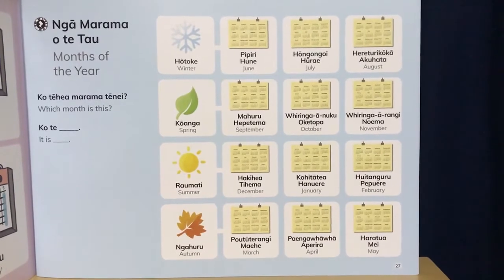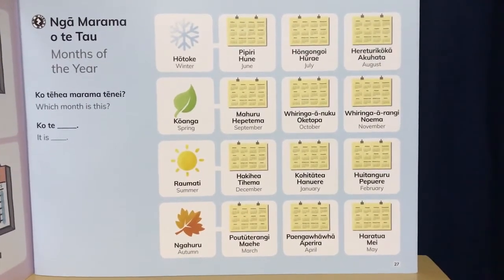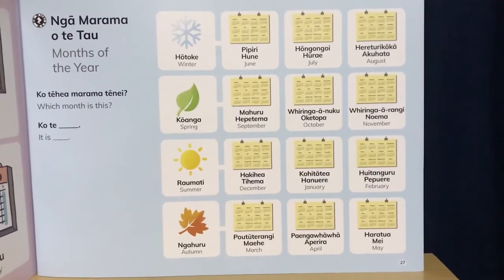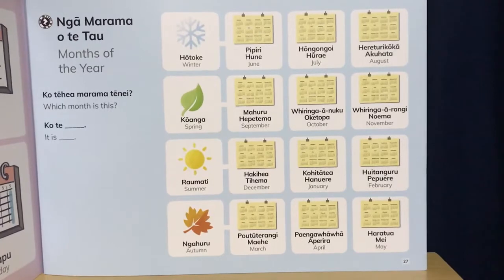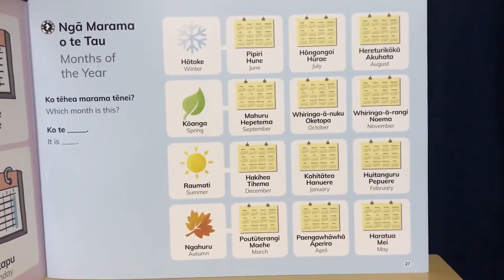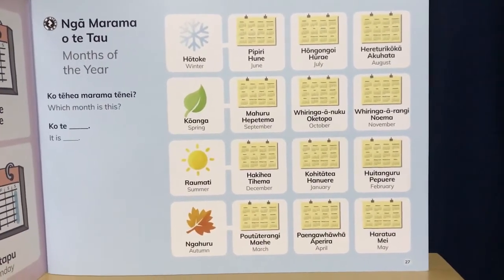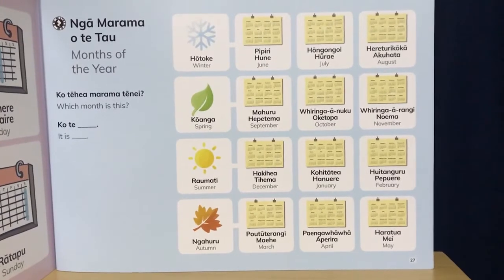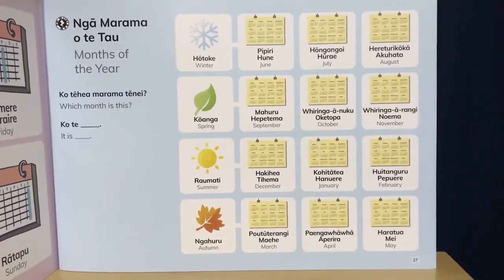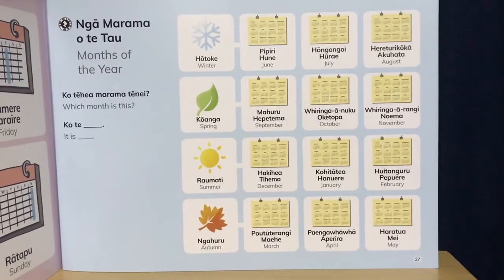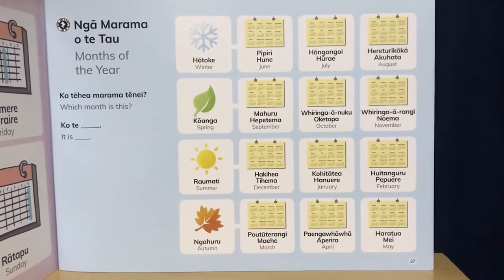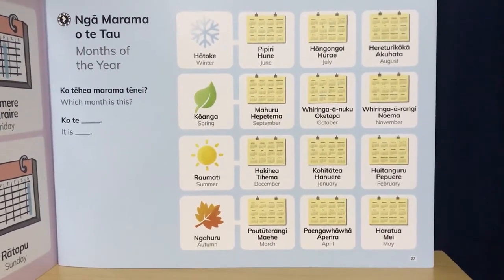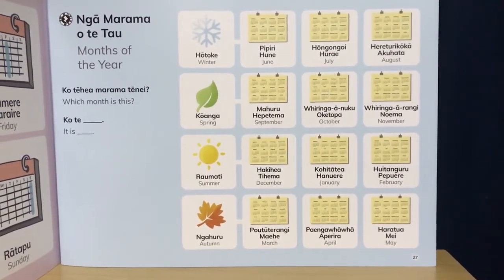For January we have kohitātia — I'm putting the emphasis on the syllable with the macron — and hanuere. For February we've got huitanguru. I said that wrong before — make sure you're looking at those vowels, like I said 'a' instead of 'u'. Huitanguru. And the transliteration for February is pepuere.